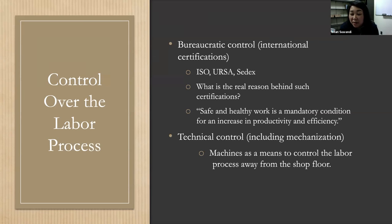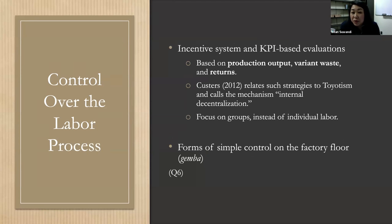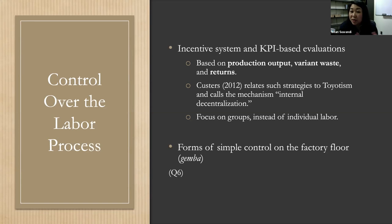There's also technical control — machines as a means to control the labor process away from the shop floor — done for example through incentive systems and KPI-based evaluations. One interesting example involves overtime. Multinationals were really strict about limiting overtime, but many low-wage workers in the global south depend on overtime to increase their income. When a competitor limited overtime abruptly, there was a massive strike and they had to lay off more than a thousand workers. Star Inc. was really nervous about this.